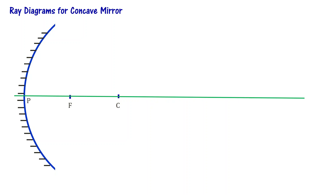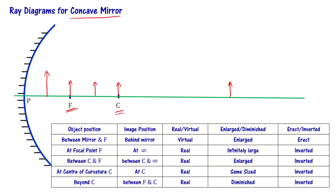In our previous video, we drew ray diagrams for the case of a concave mirror to understand how the position of the object is going to affect various properties of the image. In the case of a concave mirror, I can have an object beyond C (center of curvature), at C, between focus and C, at focus, or between P and F. By drawing ray diagrams, we understood where the image is going to be, whether it is real or virtual, enlarged or diminished, erect or inverted.